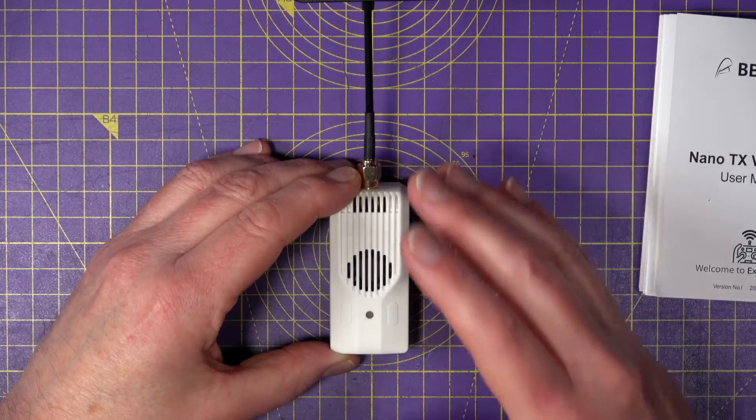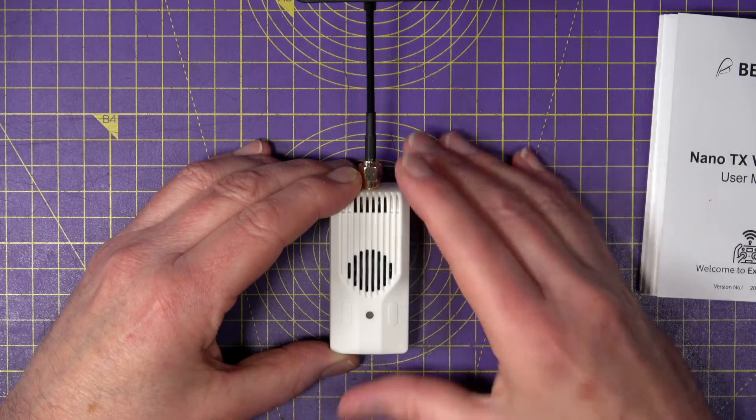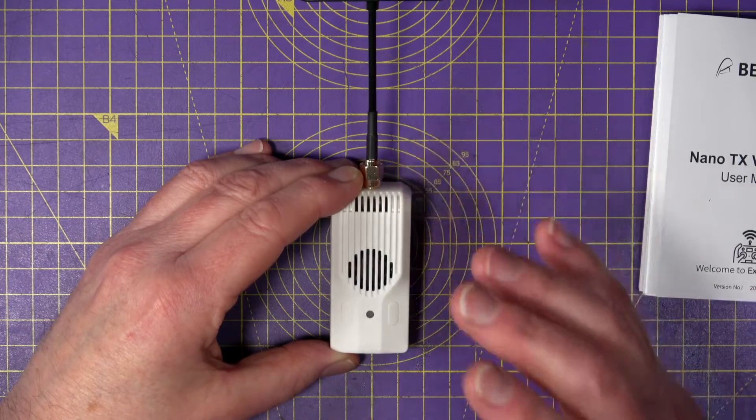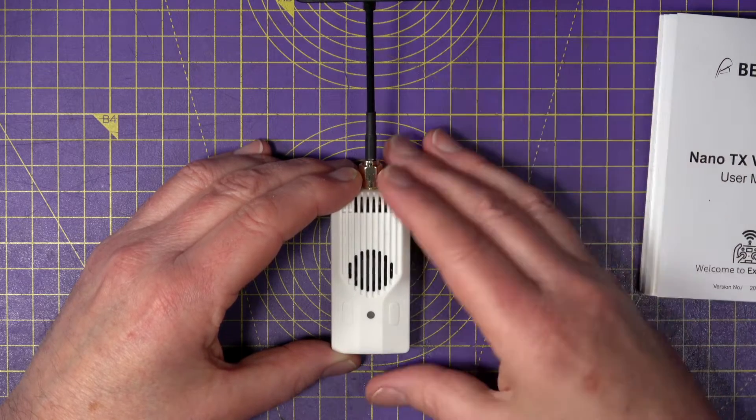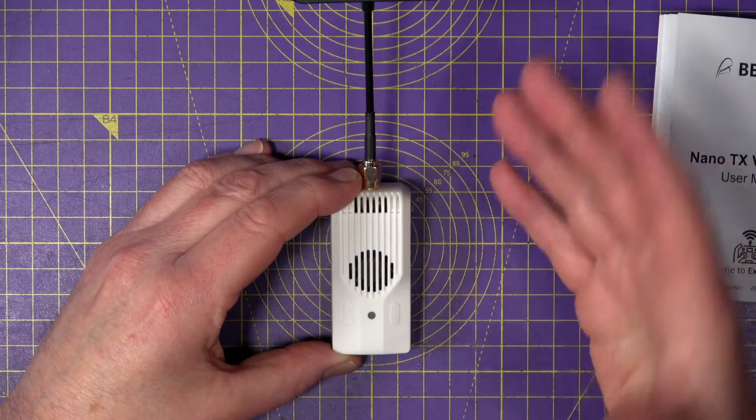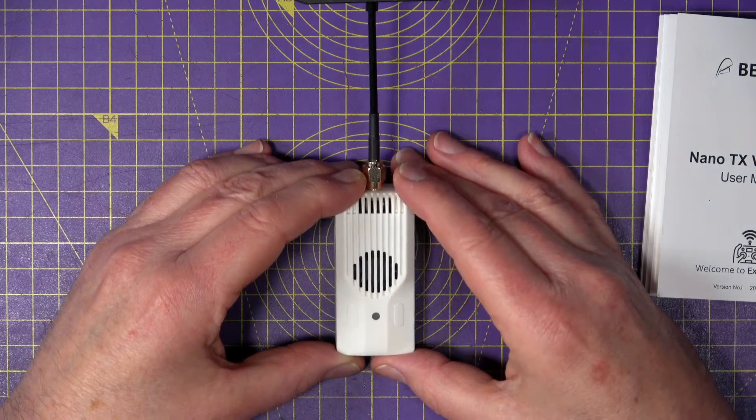And the 868/915MHz version is switchable between 10mW and a mighty 2W. The price on this is $45 or around £35 in the UK, which, as always with BetaFPV, is great value.